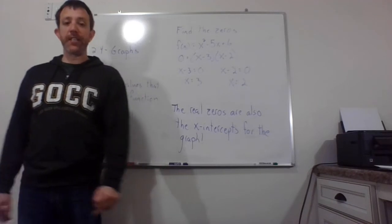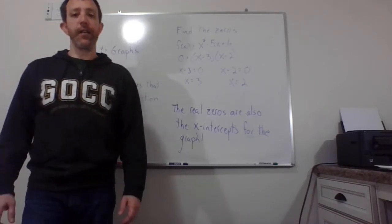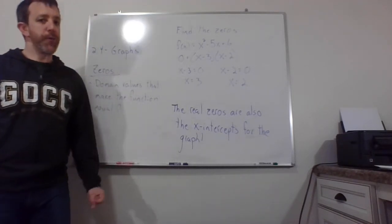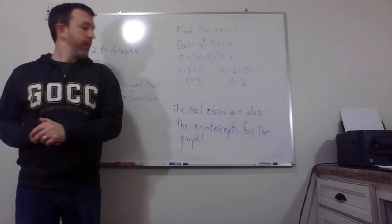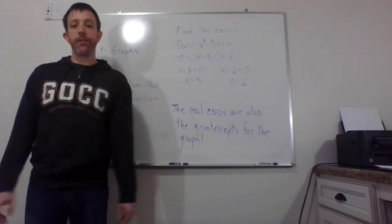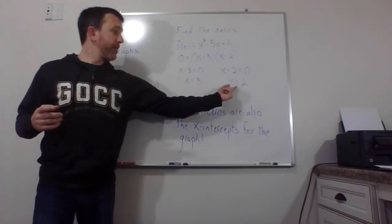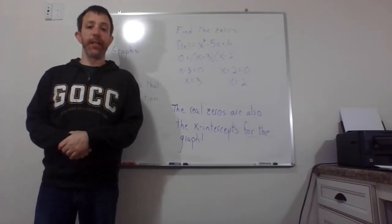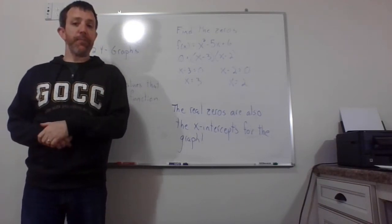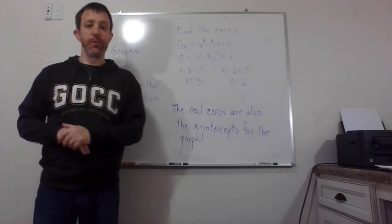Now, one important fact, and we'll talk a little bit more about this here in just a second and put our calculators to use too. The real zeros are also the x-intercepts for the function, for the graph. So if you have a function and you can find its zeros, those are going to be your x-intercepts, which is kind of handy when you're making a graph. All right, so let's talk about those calculators and let's get some new stuff on the board.